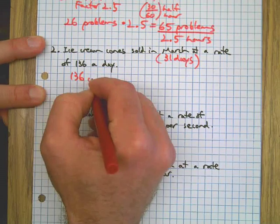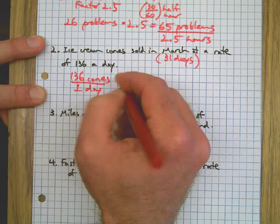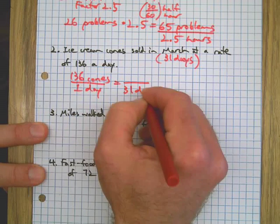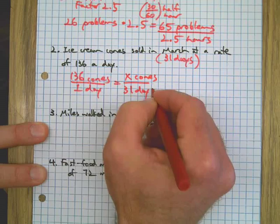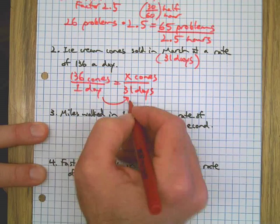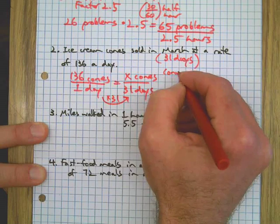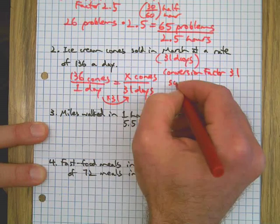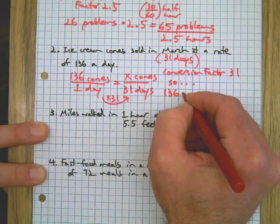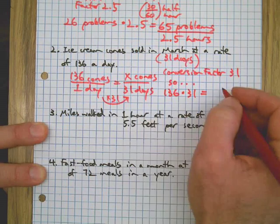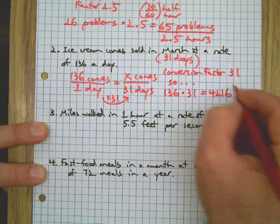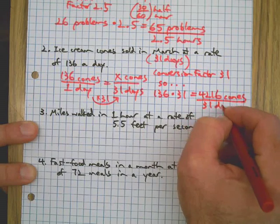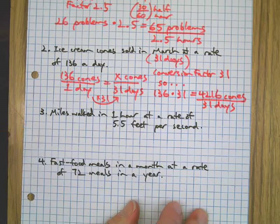Okay, if we have 136 cones in one day, you can see what the conversion factor is going to be already, right? It's going to be 31. We're going to know how many cones in 31 days. There's my factor, times 31. Conversion factor, 31. So 136 times 31 equals a whole lot of ice cream cones. 4,216 in 31 days. Nice.